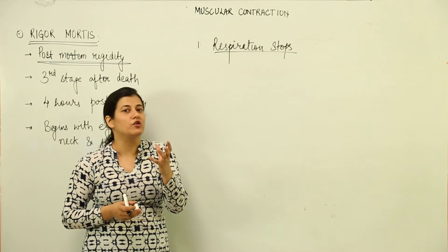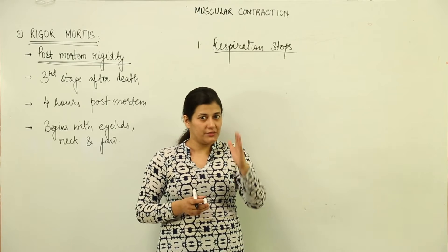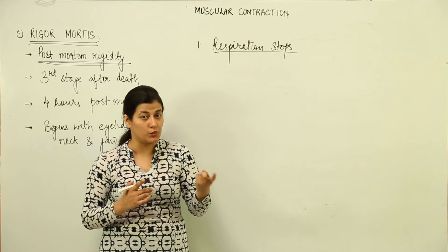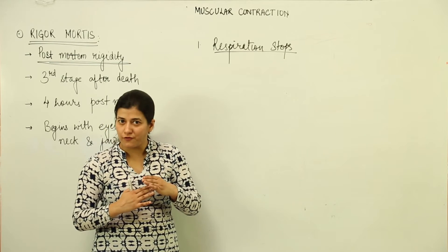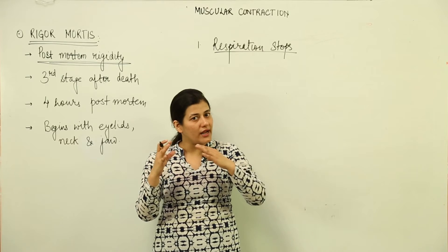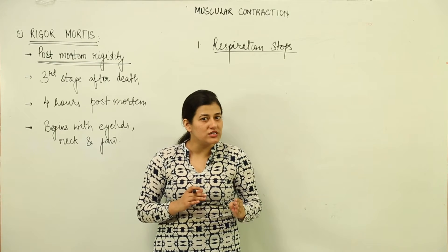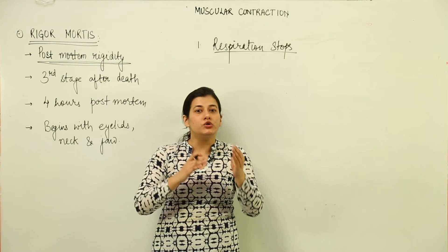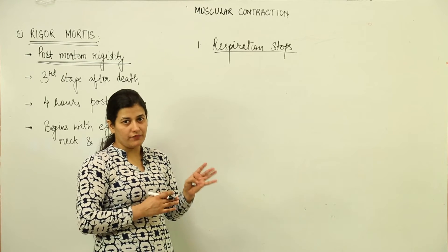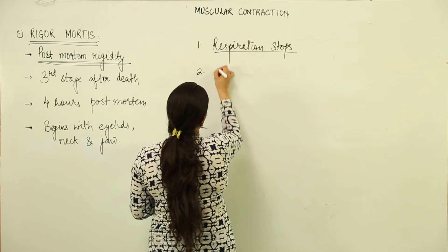Consider a body in a state of contraction: the muscles are contracted due to cross-bridge formation between the myosin head and actin filaments, whose active sites were earlier masked by troponin. Normally, ATP hydrolysis breaks these cross-bridges and the muscle returns to relaxation. But after death, respiration stops, ATP is unavailable, so cross-bridges cannot be broken. Additionally, the sarcoplasmic reticulum deteriorates and releases maximum calcium into the muscles.